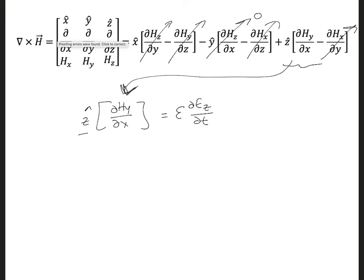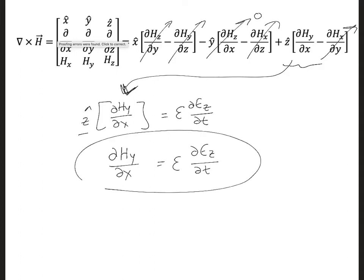Now we have the z component on both sides of our equation, and we can simplify this: dHy/dx is equal to epsilon dEz/dt. This is the second equation that we want to solve in order to model our plane wave. So now we have two equations and two unknowns: Ez and Hy.